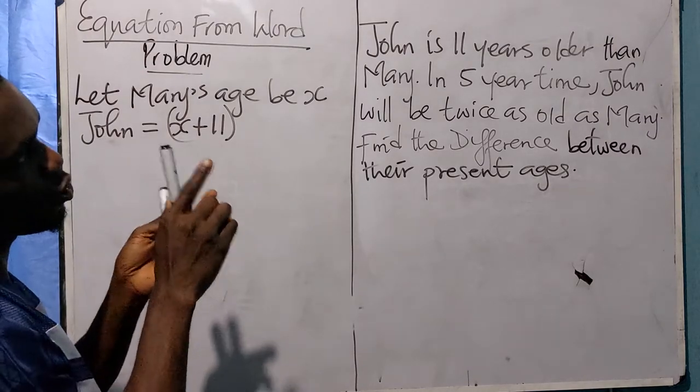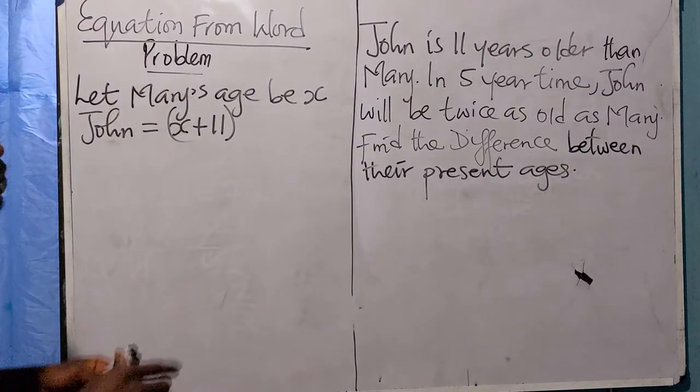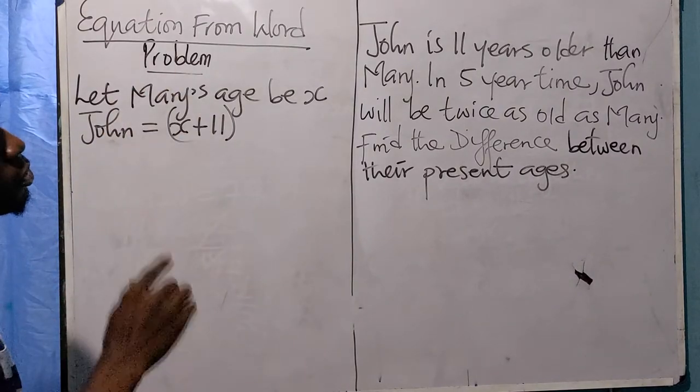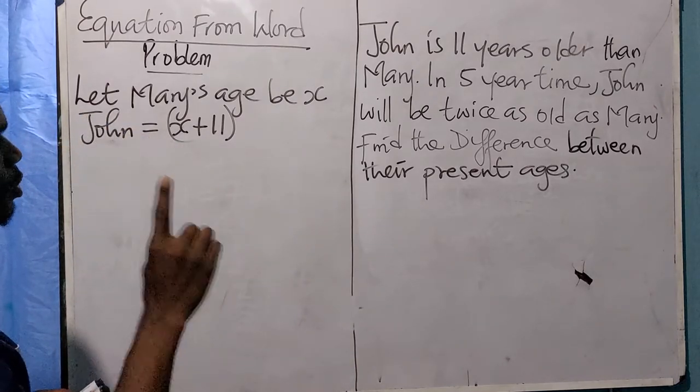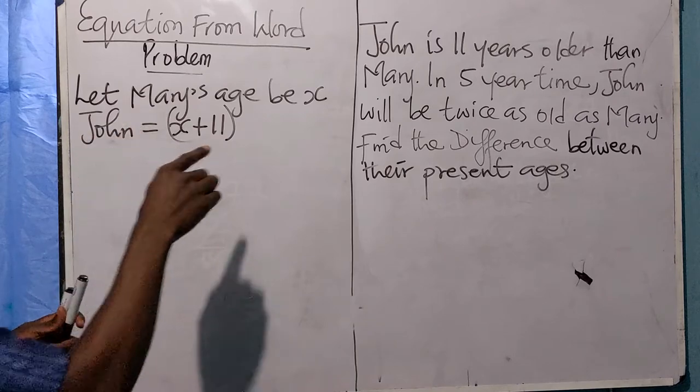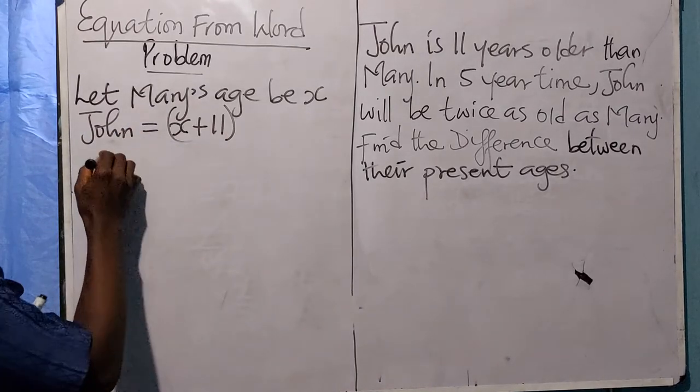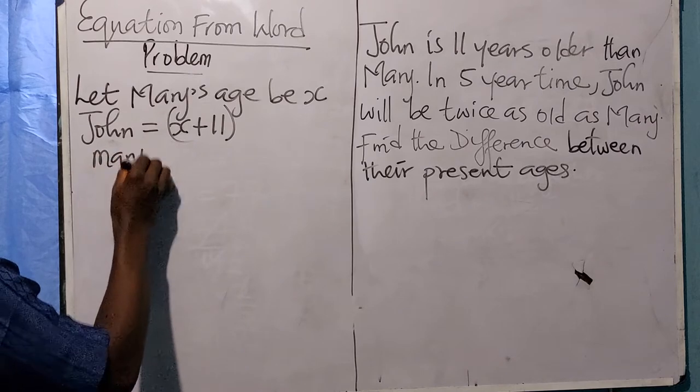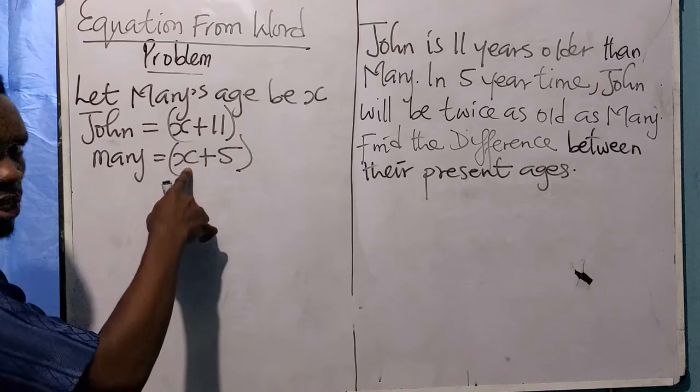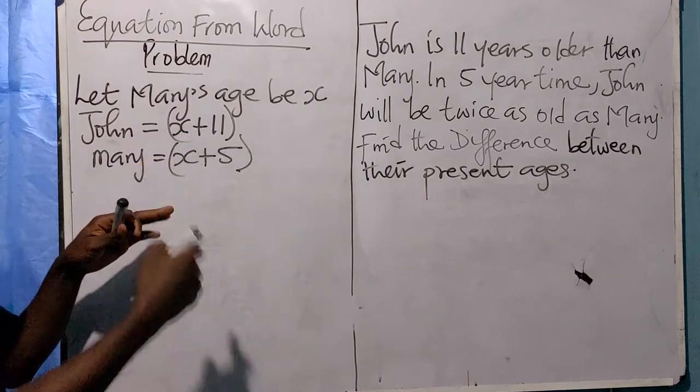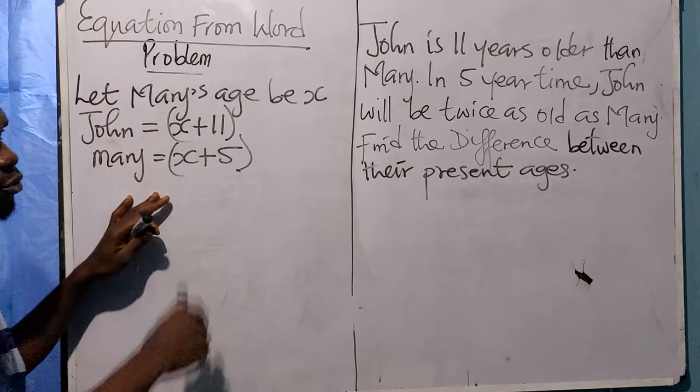In five years time, John will be twice as old as Mary. Since Mary is x years old now, in five years time Mary will be x plus 5. This is Mary's age in five years time—five years added to her current age.